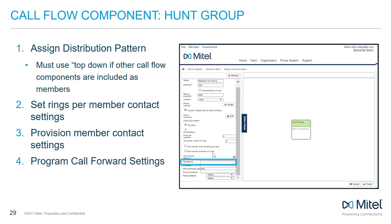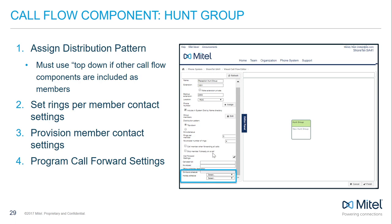If the hunt group's call stack is full — meaning all lines available to it in the backend are in use — you can assign a forwarding extension. Hunt groups are given a call stack depth of 16, meaning they can support up to 16 simultaneous calls. The no-answer field establishes where to forward hunt group calls if the no-answer condition is met. You can also enter off-hours or holiday forwarding extensions.